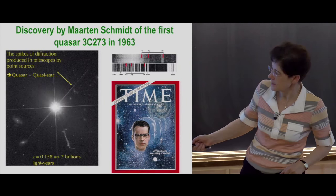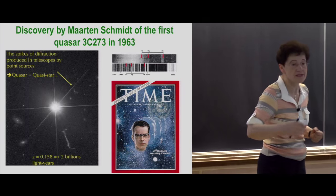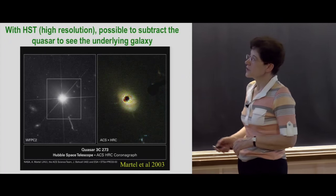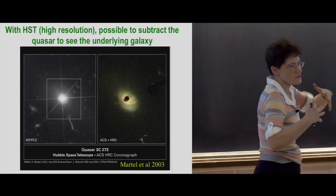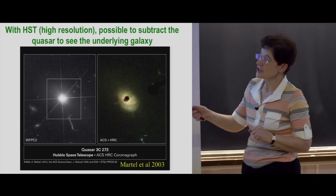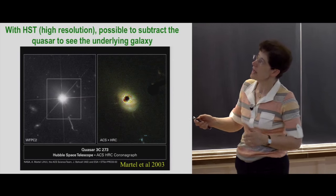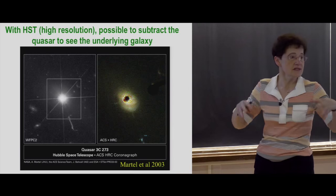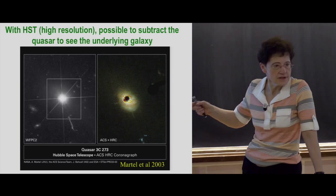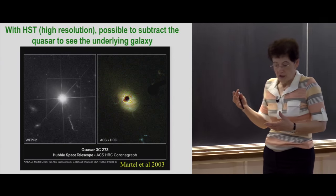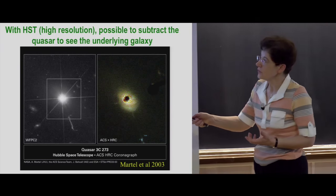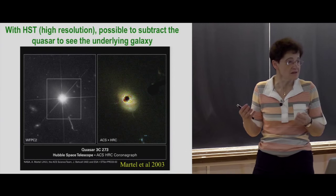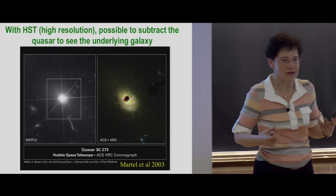Now we know that behind every quasar there is a big galaxy. At that epoch they could not see it, but with the Hubble Space Telescope, which has a lot of spatial resolution, you can subtract the quasar as a point source using a good PSF and discover a galaxy underlying behind. You can compute that the quasar is radiating 1,000 times more than the whole galaxy. The Milky Way has 200 billion stars — so a quasar radiates 1,000 times more than the entire galaxy. It's really huge.